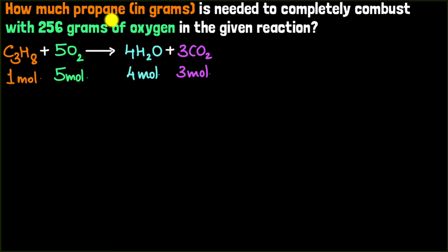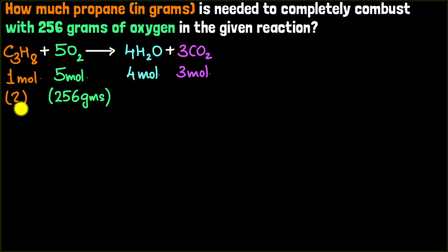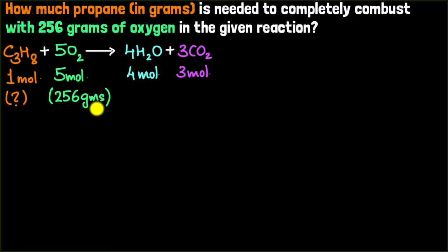We need to calculate how much propane is necessary to completely combust 256 grams of oxygen. Now, you might think: since the mole ratio of propane to oxygen is one-to-five, propane must be one-fifth of oxygen. But that would be a mistake, because this ratio only works with moles. We are given mass in grams, not moles of oxygen. A mole of oxygen has a different mass than a mole of propane, so the mass ratio would be different. We can't simply apply the one-to-five ratio here.